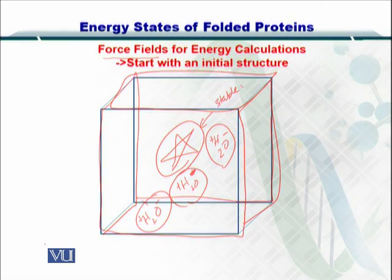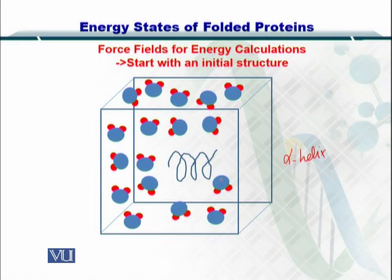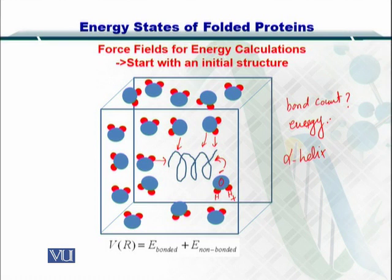Here is your protein — it's a small alpha helix — and here are the water molecules. This side has a positive charge and this side has a negative charge, and the protein is going to interact with these water molecules. Once the protein interacts with these molecules, we will see how many bonds are made (bond count) and then compute the energy. The formula for computing the energy is non-bonded plus the bonded interactions.